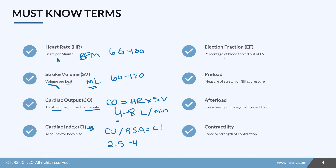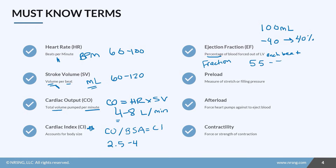Ejection fraction is the percentage of blood forced out of the left ventricle with each beat. For example, if the ventricle fills with 100 milliliters and pumps out 40, the ejection fraction is 40%. Normal ejection fraction is 55 to 75%. In heart failure, we start to see ejection fractions below 50%. We'll discuss preload, afterload, and contractility in detail in their own lesson.